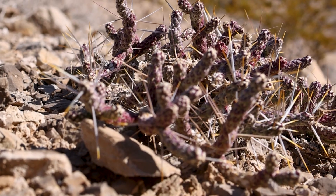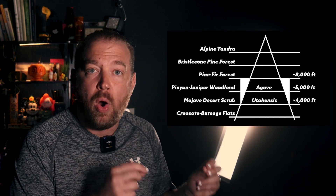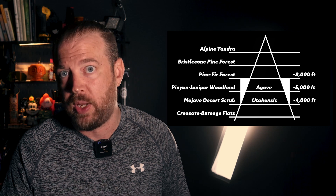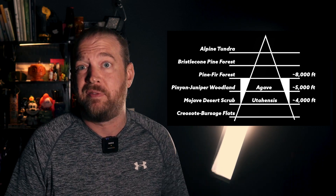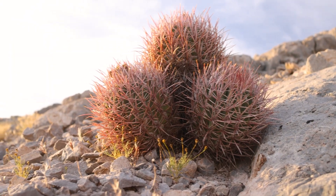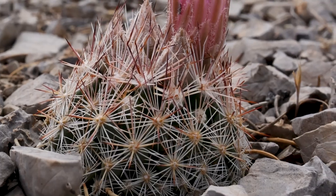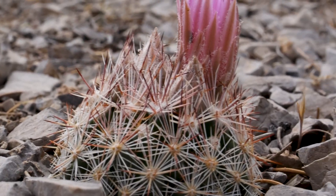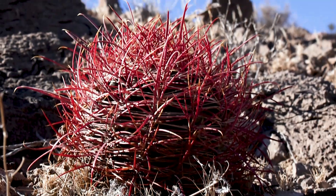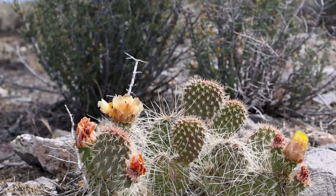You will see some cholla and cylindropuntia down there, but not a whole bunch. Most of the Las Vegas Valley lies at this life zone. One step up is the Mojave Desert scrub life zone, occurring typically between 4,000 and 5,000 feet, and this is where cactus becomes much more abundant — echinocactus, echinocereus, pincushion cactus, various kinds of escobaria, mammillaria, ferocactus, and of course cylindropuntia and opuntia — cholla and prickly pear.